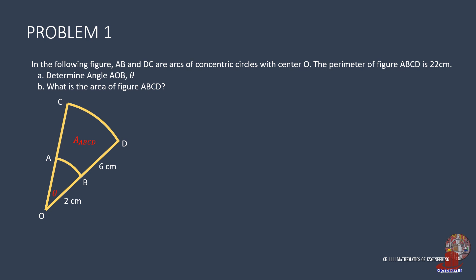With the given lengths of OB as 2 and BD as 6, we can reflect the length of AC also as 6. The perimeter comprises arc AB plus 6, arc CD plus 6. This gives 22 equal to AB plus CD plus 12, where the arcs AB and CD are taken as 10. Now we use the fact that they are concentric circles, meaning they have the same center, and the sectors shown have the same central angle.